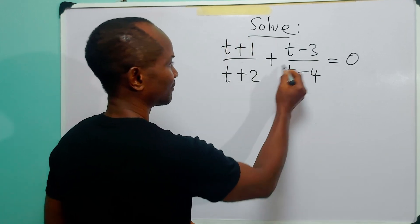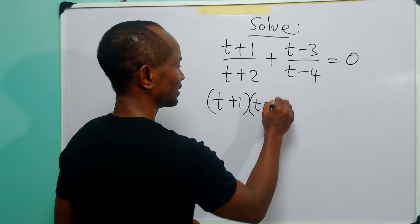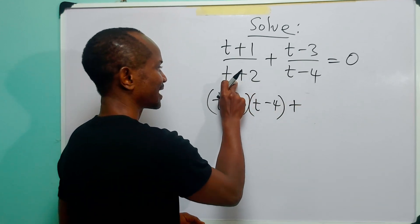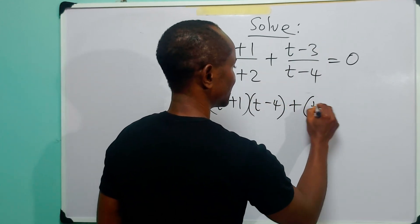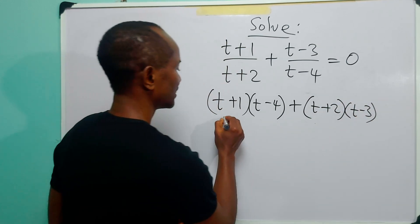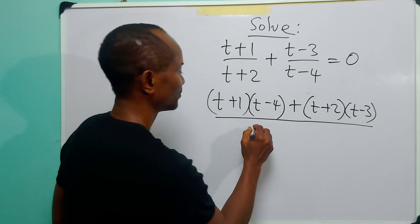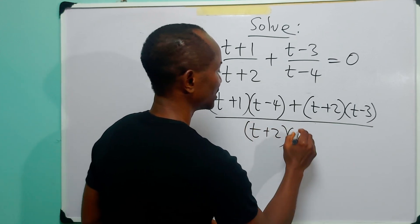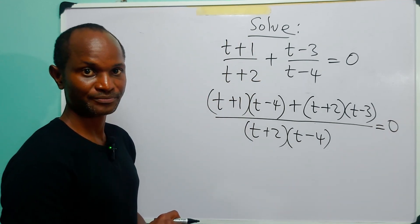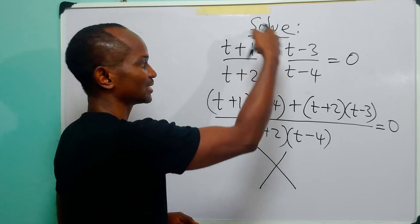The first thing to do is we multiply this by this — that is (t+1) multiplies (t-4). We write down the sign, and then we multiply this by this — that is (t+2) multiplies (t-3). Then we draw the line and multiply (t+2) by (t-4) for the denominator.